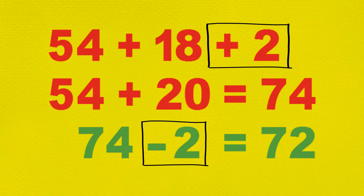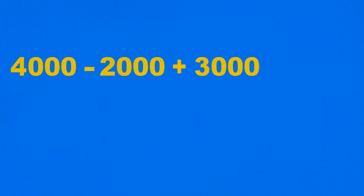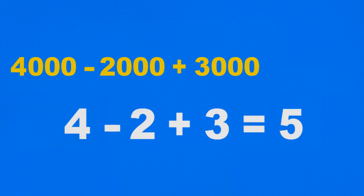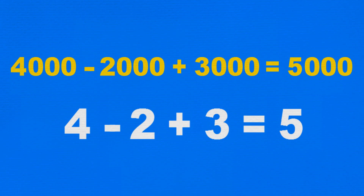"And sometimes," piped in Max, "another method is using very small sums to solve much bigger ones. For example, if we had to solve 4000 minus 2000 plus 3000, we know that 4 minus 2 plus 3 equals 5, so then the much bigger sum would equal 5000."